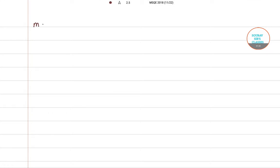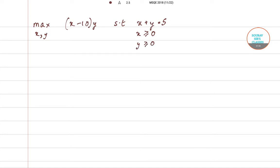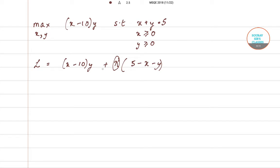Our optimization exercise is: maximize over x and y the function (x-10) times y, subject to x plus y equals 5, x greater than or equal to 0, and y greater than or equal to 0. We form the Lagrangian: L = (x-10) times y plus lambda times (5 minus x minus y), where lambda is the Lagrangian multiplier taken as a positive quantity.